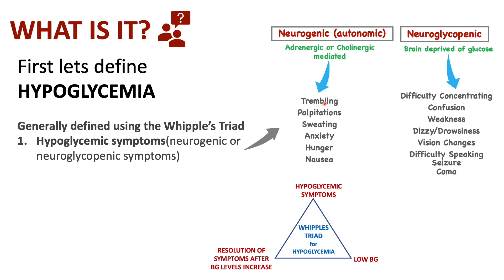Neurogenic symptoms can include trembling, palpitations, sweating, nausea, and anxiety. Or it can include neuroglycopenic symptoms, which is when the brain is deprived of glucose. That can lead to difficulty concentrating, dizziness, weakness, confusion, and vision changes. If severe enough, it can lead to a seizure or coma.